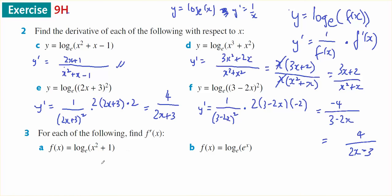Question number 3. F dash of x will equal 1 on top of x squared plus 1. My tablet's not working very nicely down there. Plus 1. Times 2x, which is 2x on top of x squared plus 1.